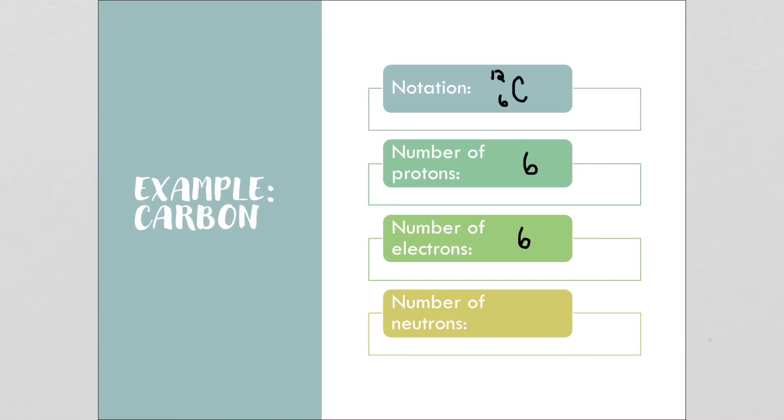For the number of neutrons, you take the mass number and subtract the atomic number. That gives you the number of neutrons that are left. 12 subtract 6 equals 6 neutrons.